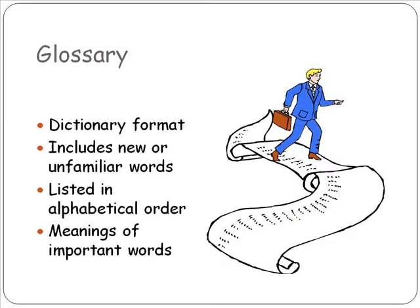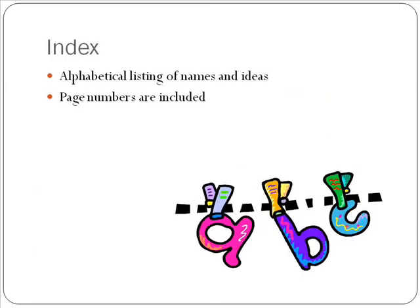The glossary of a book is written in dictionary format and includes new or unfamiliar words. It is listed in alphabetical order and has the meanings of very important words in the book. The index is an alphabetical listing of all the names, subjects, and ideas in the book, with page numbers included to help you locate where to find each subject.